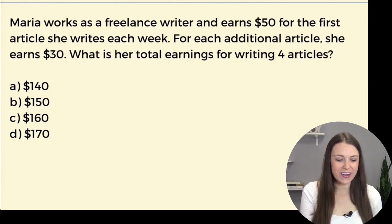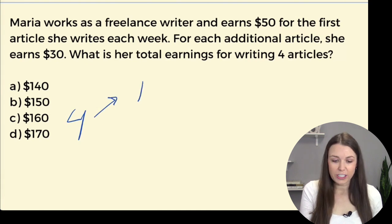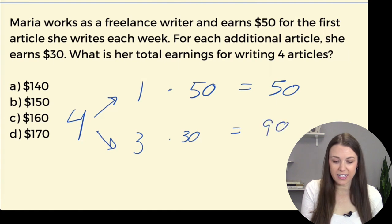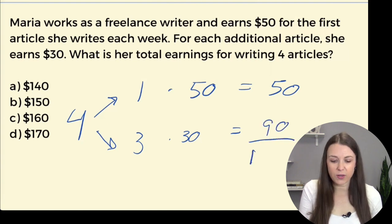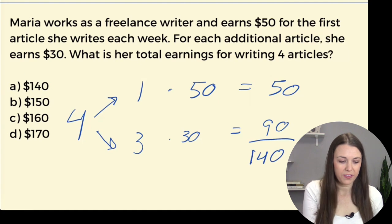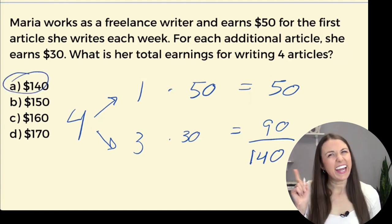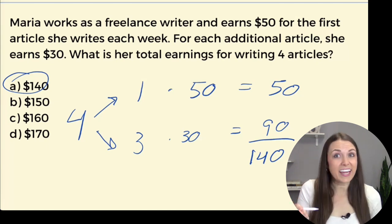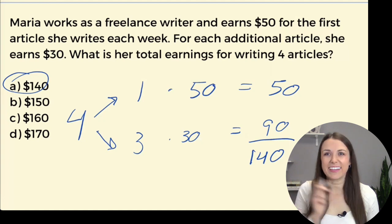Okay, so we're looking at four articles here. For the first one, she makes $50. And then for the additional three, she earns $30. So three times 30 is 90. We add these together and we get 140. That's how much she makes for writing the articles. Don't you think she should get paid more for writing the second, third, and fourth article? I think so.